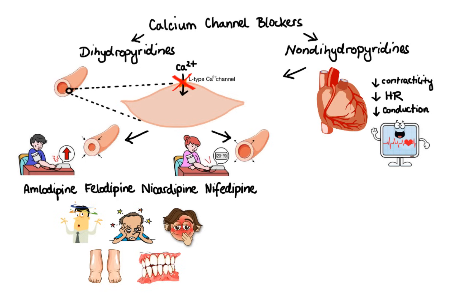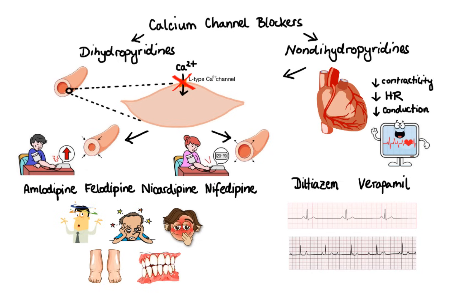Now it's important to remember that even though decreased heart contractions typically result in decreased cardiac output, non-dihydropyridines do not significantly decrease cardiac output, most likely because of the reflex tachycardia that occurs as a result of vasodilation. Currently there are only two drugs that belong to this group, namely diltiazem and verapamil. Non-dihydropyridines can cause excessive bradycardia and cardiac conduction abnormalities.